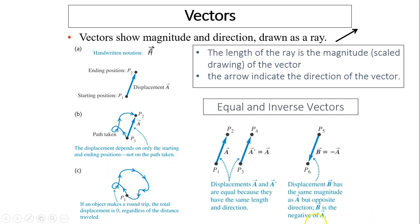Now you call it the inverse vectors. So here are two vectors, A and A prime. They are the same. That is because they have the same length and they are pointing in the same direction. Now B is from P5 to P6. B and A are opposite. They have the same size, but they are going in the opposite direction. So B is a negative of A. So B and A, we call those are inverse vectors.